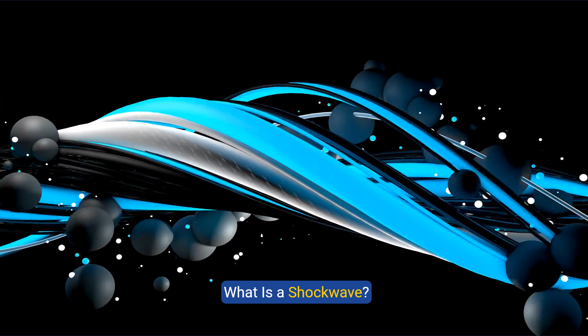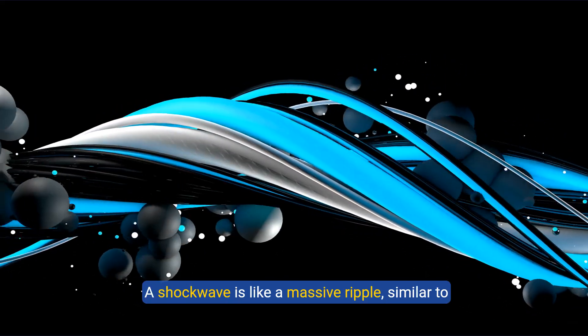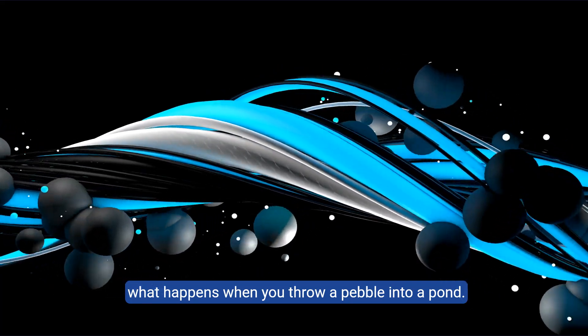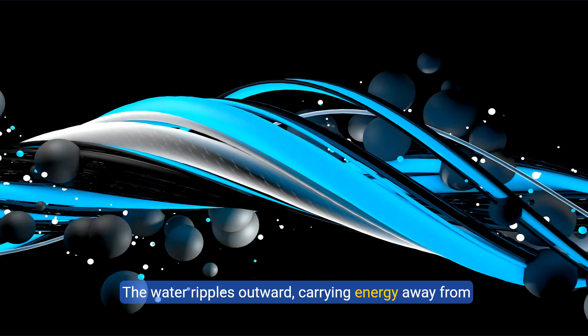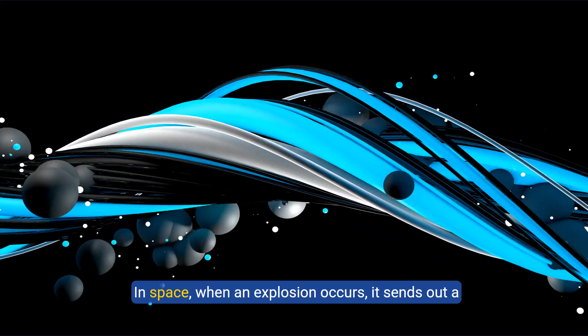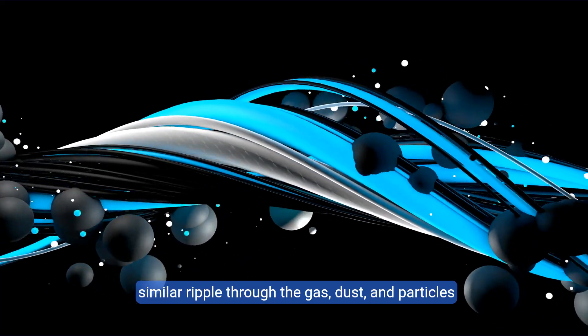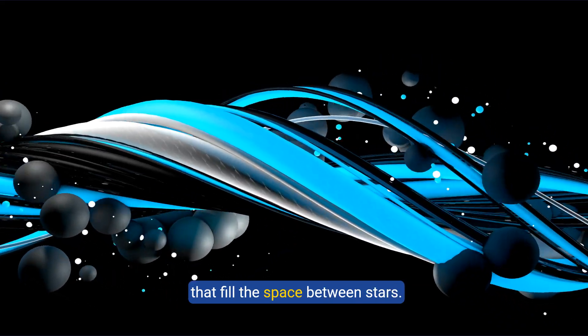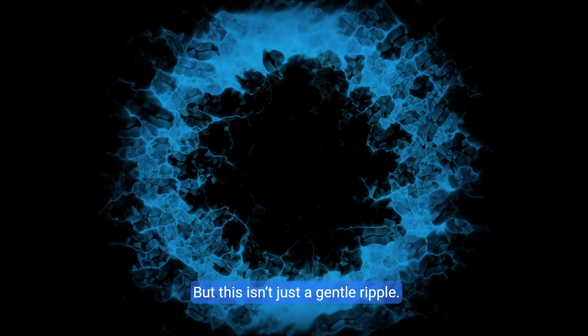What is a shockwave? A shockwave is like a massive ripple, similar to what happens when you throw a pebble into a pond. The water ripples outward, carrying energy away from the point where the pebble hit. In space, when an explosion occurs, it sends out a similar ripple through the gas, dust, and particles that fill the space between stars. But this isn't just a gentle ripple.